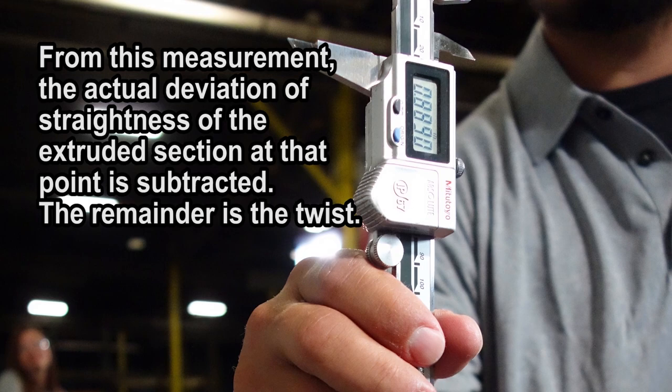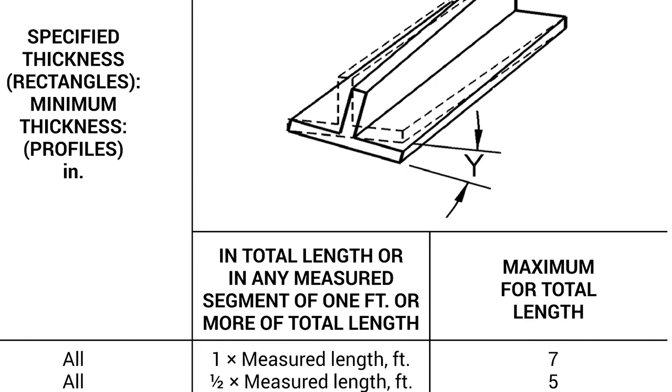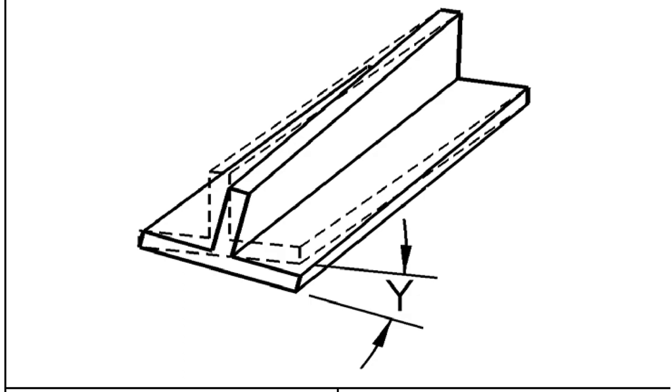To convert the standard twist tolerance from degrees to an equivalent linear value, the sine of the standard tolerance is multiplied by the width of the surface of the section that is on the flat surface.